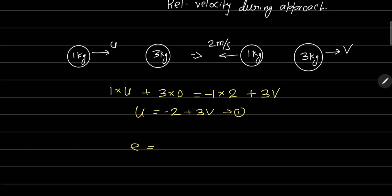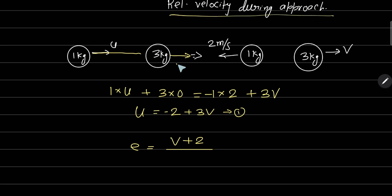Coefficient of restitution के according, relative velocity of separation — यह दोनों velocity opposite direction में हैं, तो हम add करेंगे। Before collision, during approach, 3 kg body का velocity 0 है तो सिर्फ u है। e का value 1 है, तो यहाँ से: v + 2 = u — यह equation number 2 हो गया।